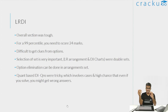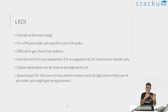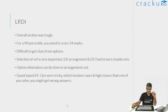The selection of the set is very important, and option elimination is also valuable in the arrangement set. For the quant-based LR questions, somebody who is not comfortable with numbers — who doesn't immediately know the HCF of two numbers like 84 and 56 — will find it difficult. People who are not comfortable with factors, numbers, and geometric progressions have a good chance of getting wrong answers in the quant-based LR set. So this is the overall summary of the LRDI section.